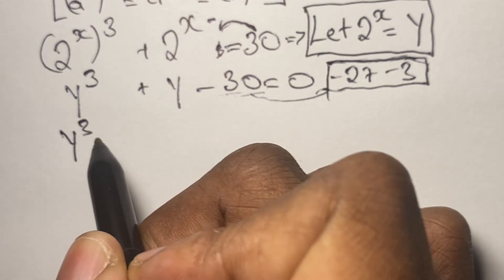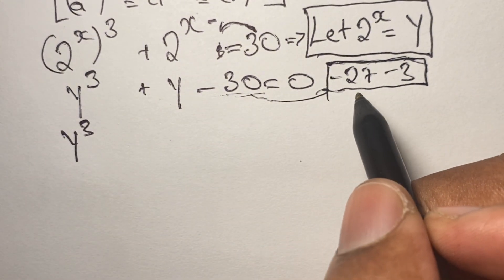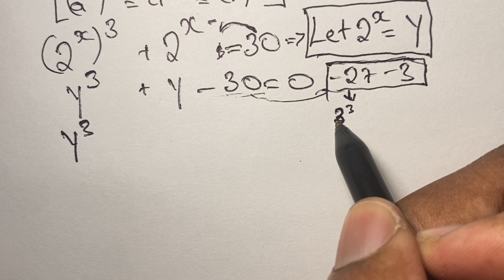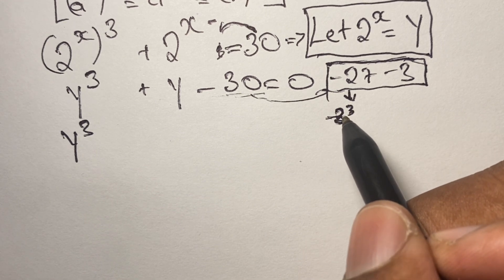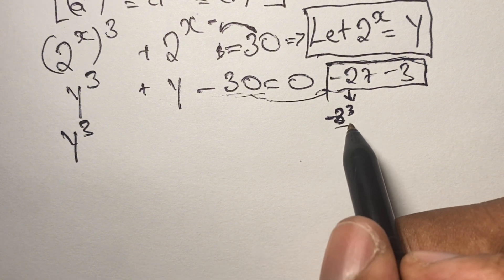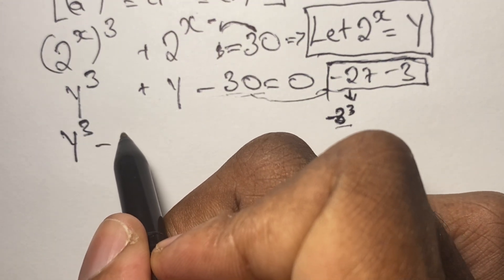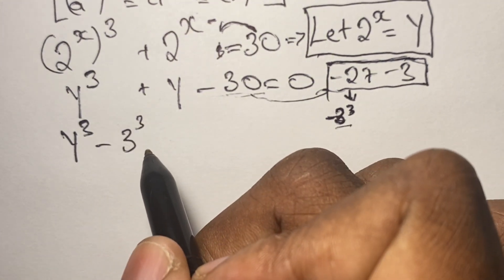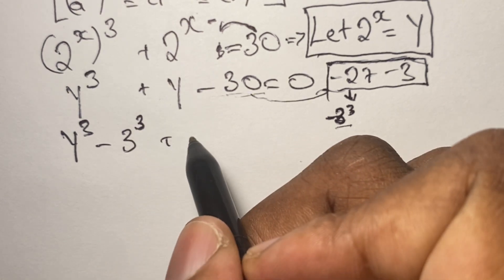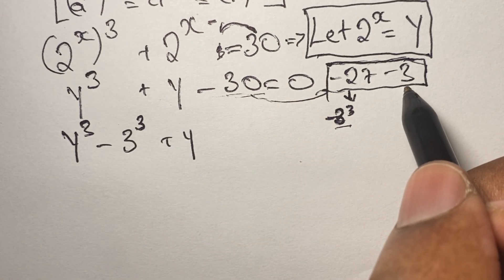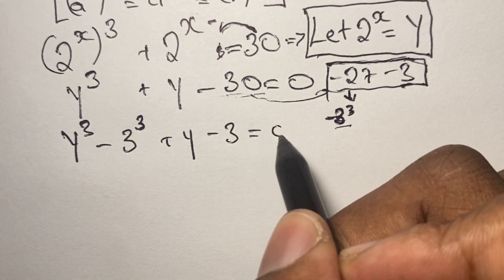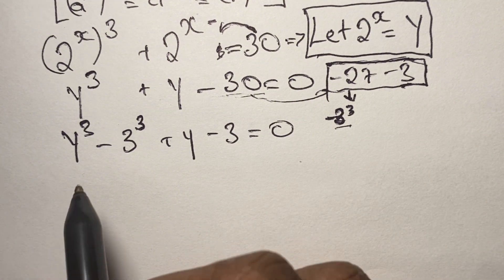So we have y cubed and negative 27. Since 27 is a cubic number, that is 3 to the power of 3, so we have y to the power of 3 minus 3 to the power of 3. Then we group the remaining terms: plus y and negative 3, giving us plus y minus 3, equal to 0.